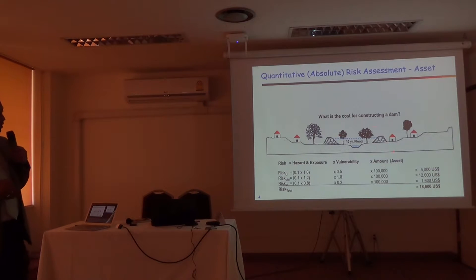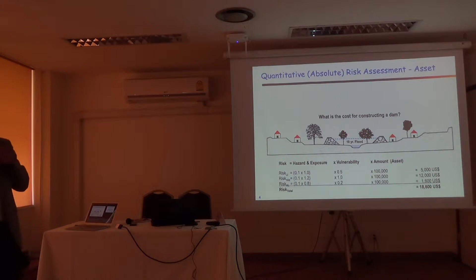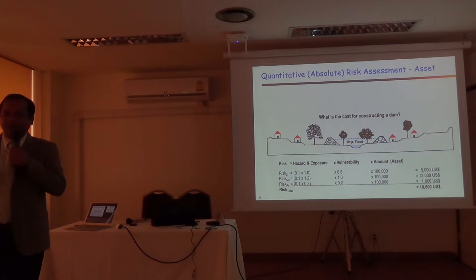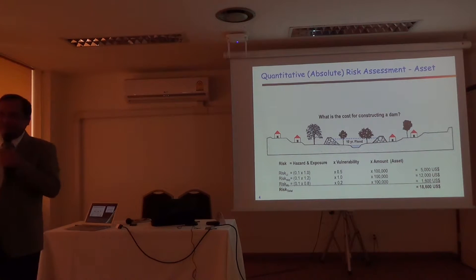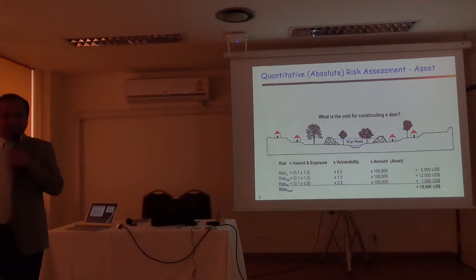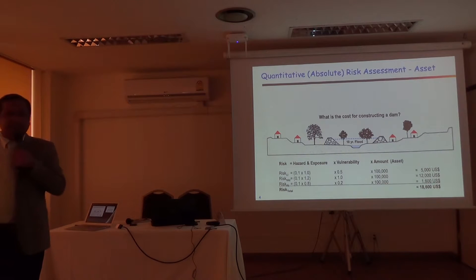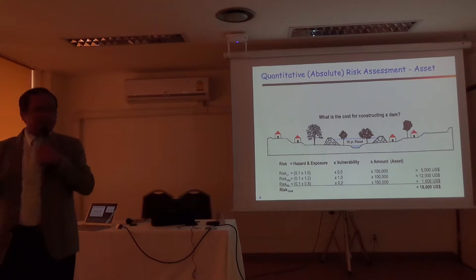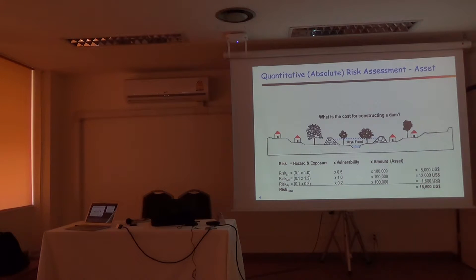This is the actual scenario. Whenever we talk about disaster, we normally talk about cities. If there is a flood in a rural area, nobody talks about it. But two months back, there was a big flood in India — Chennai — and everybody talked about it, because it affected so many things.